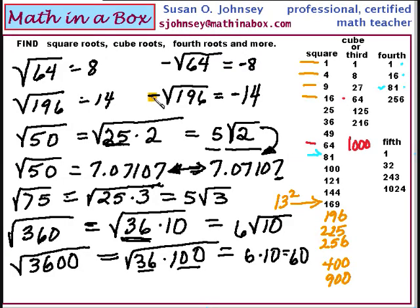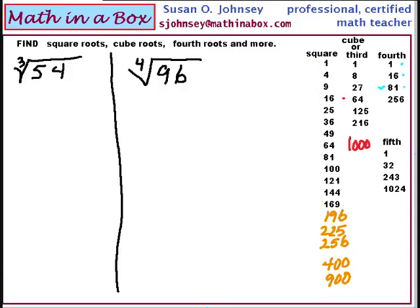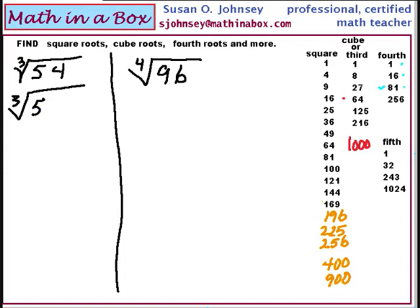Let's look at some cube roots now. Look at your cube root list. The cube root of 54 — we do not know that one; 54 is not on our list. But what number here will divide evenly into 54, other than 1? 8 will not divide evenly into 54. But 27 will — 27 times 2. So the cube root of 54 can be changed to the cube root of 27 times 2. The cube root of 27 is 3. The cube root of 2 we do not know, so it stays underneath the radical. Our answer is 3 times the cube root of 2.